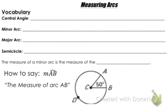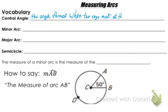Let's start with our first vocabulary word: a central angle. A central angle is the angle formed when two rays meet at the center of the circle. So an example in this picture of a central angle would be angle C right there.